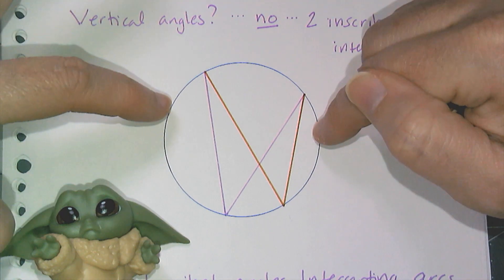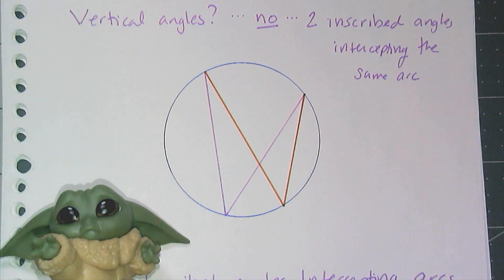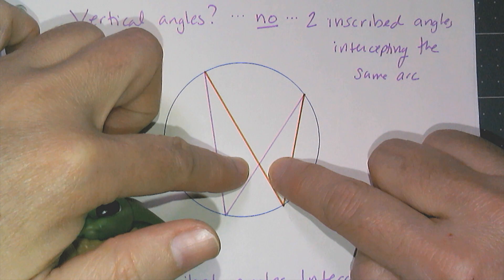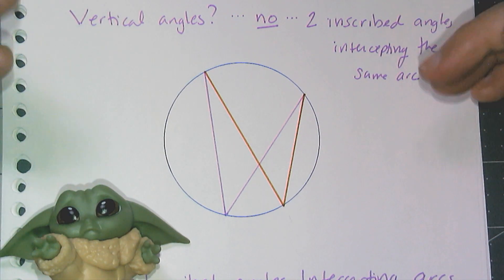And when I first see this drawing, to this day, my brain still goes to vertical angles right there. Now it's a circle with four chords drawn on it, but those four chords form something much more important than just vertical angles and some triangles.